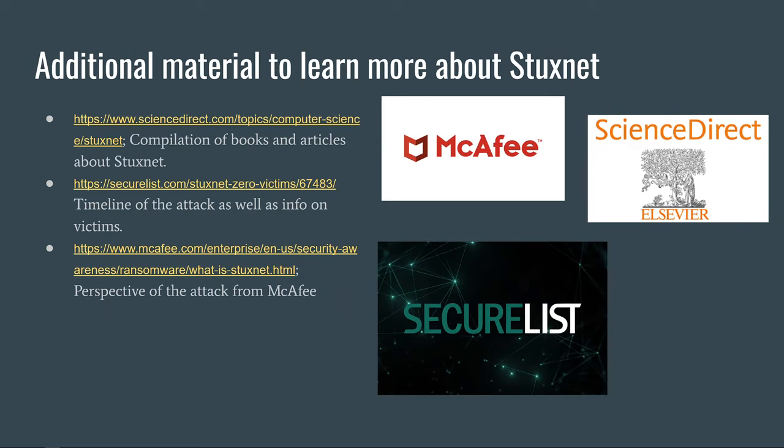Some interesting articles and websites about Stuxnet are linked on this slide. The ScienceDirect link provides a compilation of various books and articles about Stuxnet, with relevant excerpts and links to purchase sources. The SecureList link goes into detail on the victims of the Stuxnet attack, the timeline of events leading up to and following the attack. The McAfee link provides the attack from the perspective of a global computer security company, going into detail about what the worm did, the legacy of the attack, and how industrial networks can further protect against similar malware attacks.